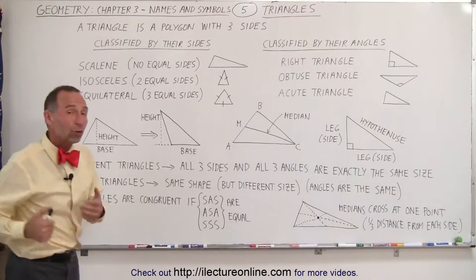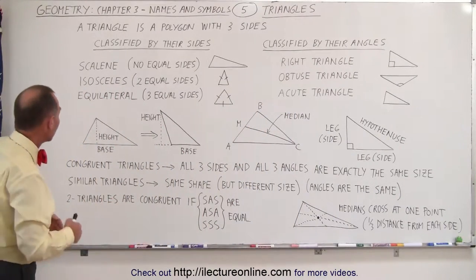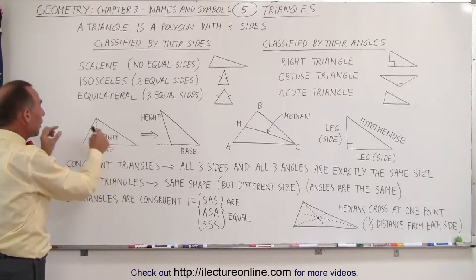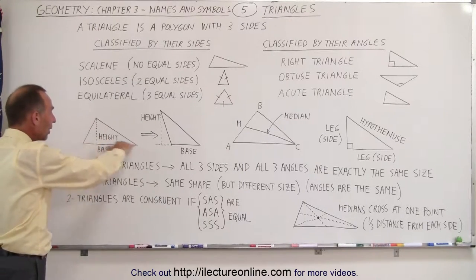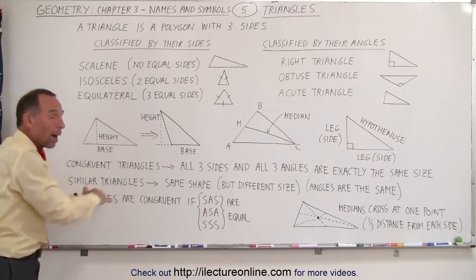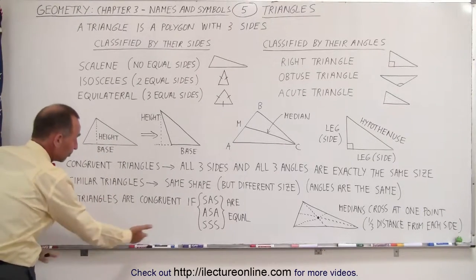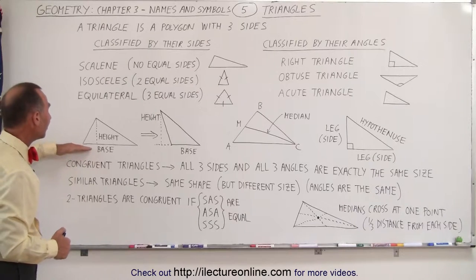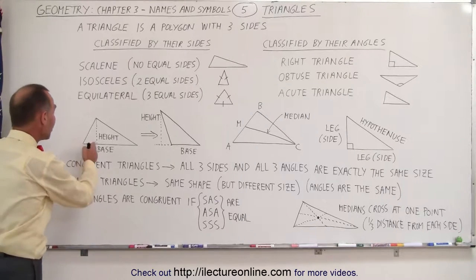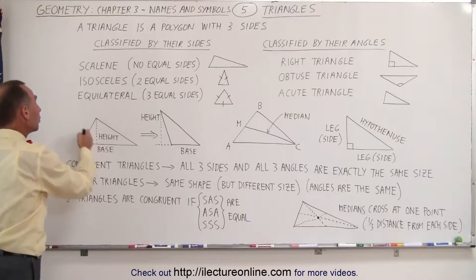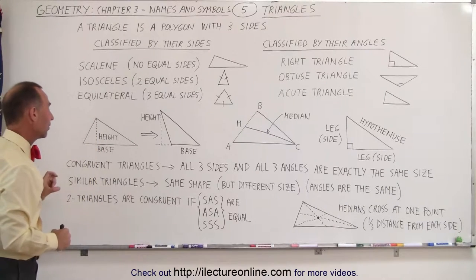Some other names we should be familiar with: if we look at a triangle and draw it so that one of the sides is parallel to the bottom of the paper or the board, we call that the base. Then the perpendicular distance from the base to the highest point of the triangle is called the height.